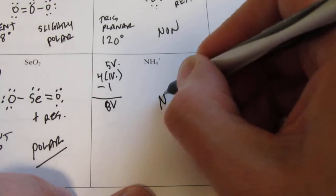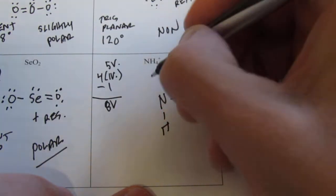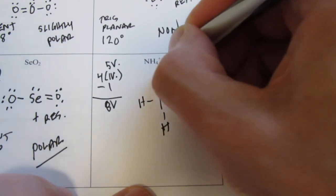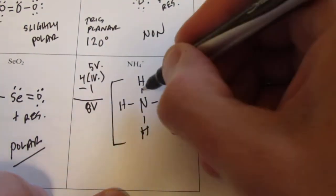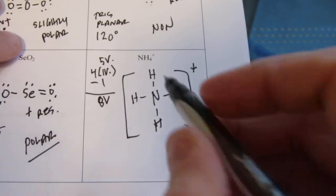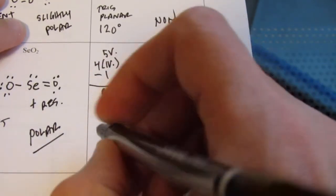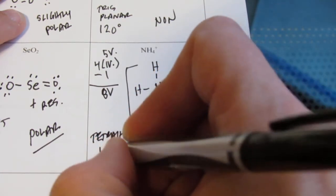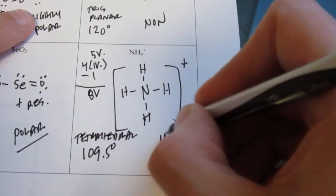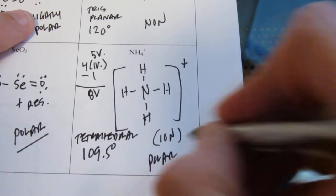Ammonium, NH4+. Nitrogen is in group 15, so there are 5 valence electrons. Each hydrogen has 1 valence. I'm going to subtract 1 from the total because that's a positive ion — that gives me 8 valence to work with. I'll put nitrogen and bond it to 4 hydrogens. I'll put brackets around it so the reader knows I had to take an electron away for that to work. 2, 4, 6, 8 — that's what I'm allowed. Four pairs — that is tetrahedral. The bond angle is going to be a nice pretty 109.5. Normally we'd say that's non-polar, but we have an ion again, so we're going to call that polar.